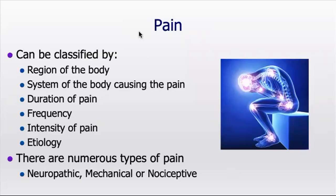Pain can be very complex and can be classified by a number of different strategies. You can talk about pain in terms of the region of the body where you're experiencing it — chest pain, low back pain, neck pain. You can also talk about pain in terms of what systems it's affecting: joint pain like arthritis, visceral pain, neurological pain, or musculoskeletal pain — looking at what system of the body we're dealing with.